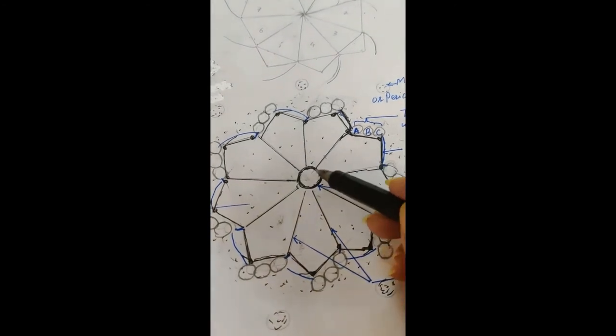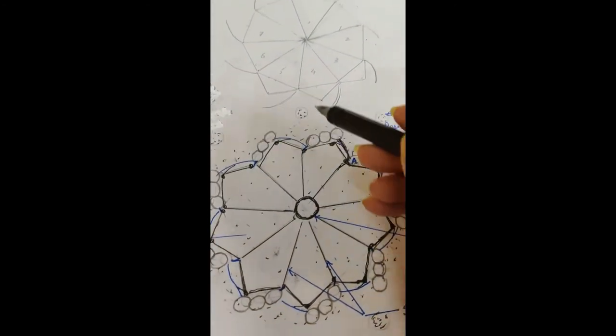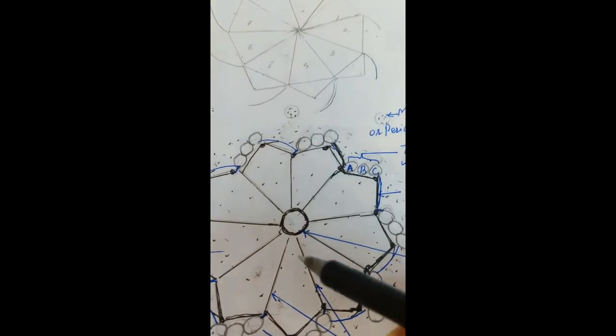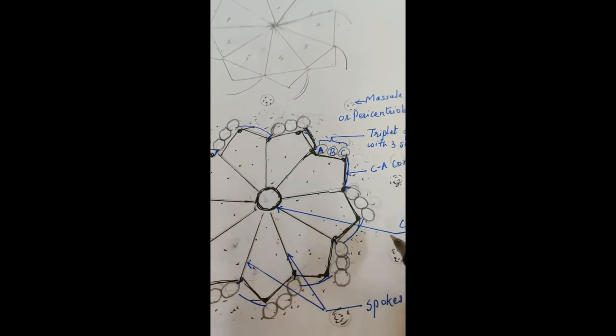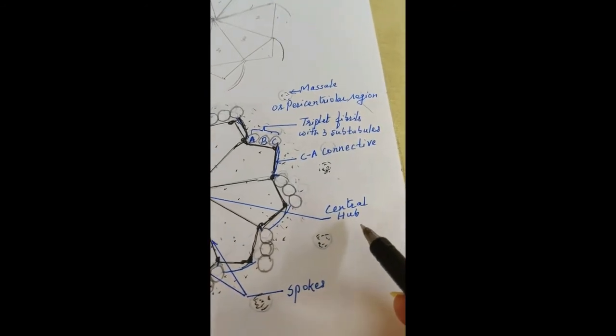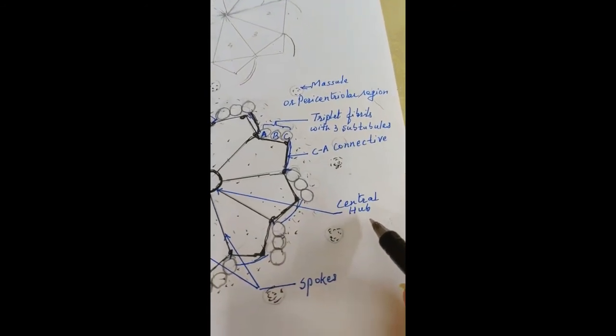And the central part you will rub off. Here this part you have rubbed off and made a small circle depicting the central hub. This is also protein central hub.